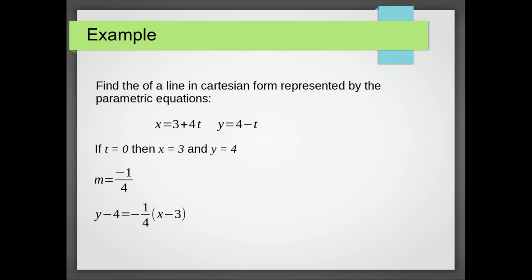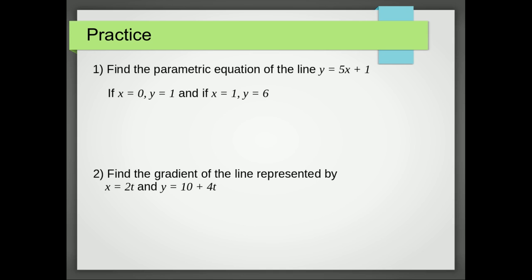Okay, so to find the parametric equation of a line, all we need are two points. So as we said before, if x equals 0, y equals 1, and x equals 1, y equals 6. And we're just going to substitute those into these two equations. So because x₁ is 0, there is no constant term, we just get x equals t. And in the next one, we get y equals y₁, which is just 1, plus the difference in the y's, which is 5t.